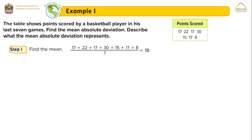The points scored are 17, 22, 17, 30, 15, 17, and 8. The first step is to find the mean. The mean is the total of the data divided by their number. Since we have seven values, we add all together and divide by seven. The mean is 18.